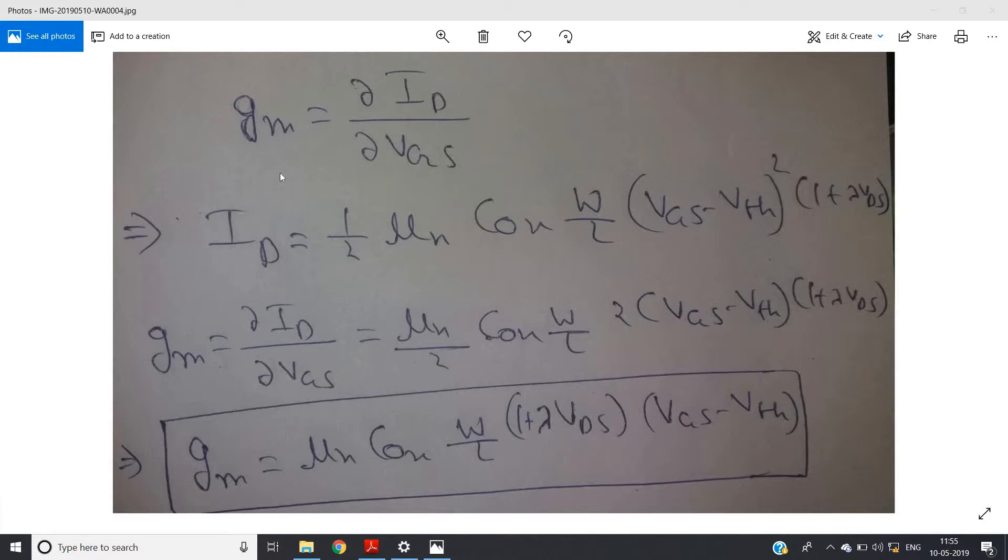So in this video I am going to show you the mathematical expression of gm or transconductance including the channel length modulation. This is very simple: just consider the drain current expression with channel length modulation, then differentiate.